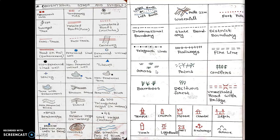Relating to vegetation: the symbol for grass is green. There is a sign for palm trees such as Indian dates, a sign for conifer trees — like cedars, pines, and redwoods — which have needle-like leaves, a symbol for bamboos, and deciduous trees, which are the most common vegetation feature you will find on the map. These symbols are already present in your map.